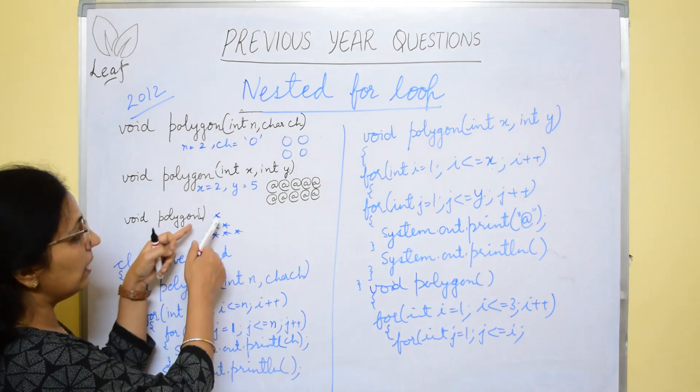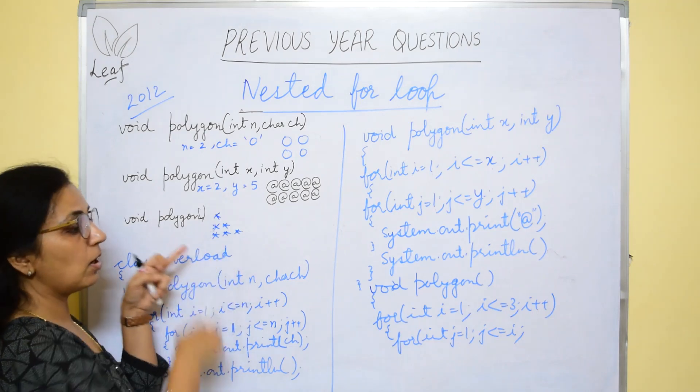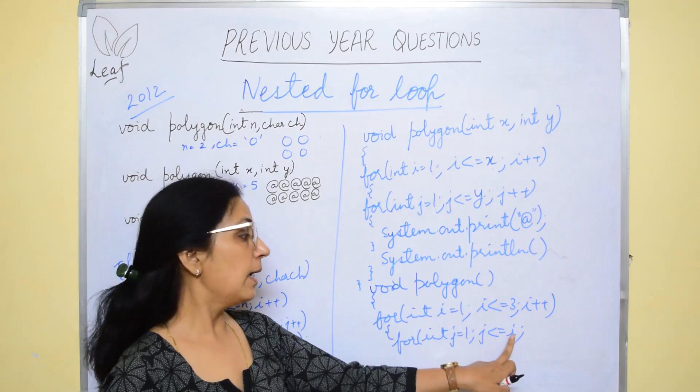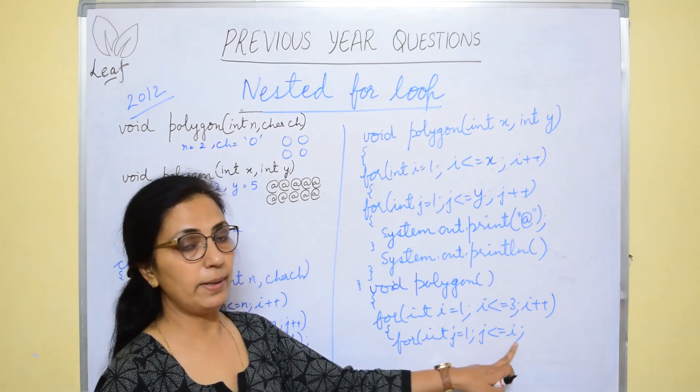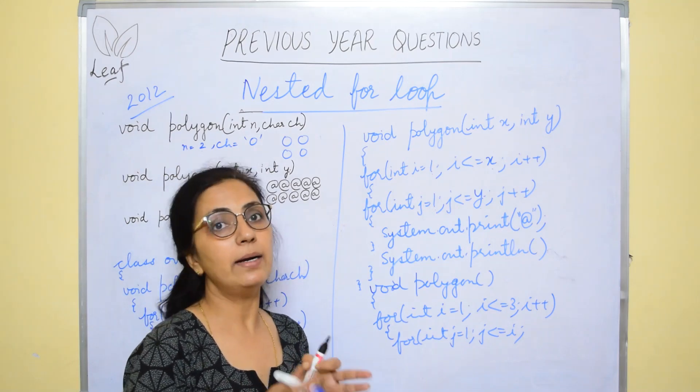Second row, 2 columns. Third row, 3 columns. So, it is variable, not fixed. Whenever it is fixed, here also constant value will be there. But, when the number of columns in each row are different, then always you will have the variable over here.